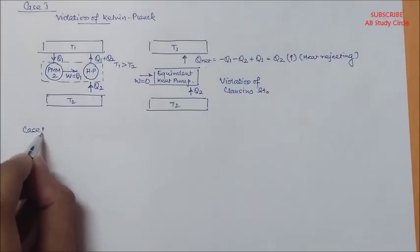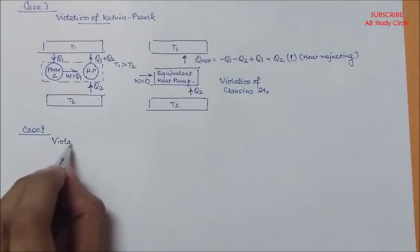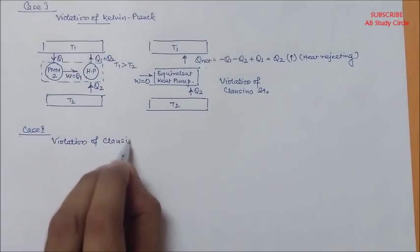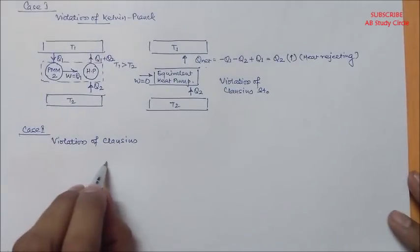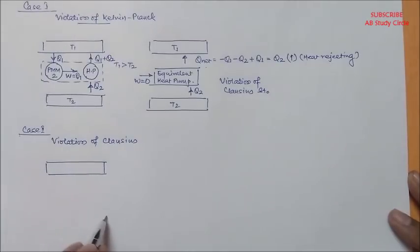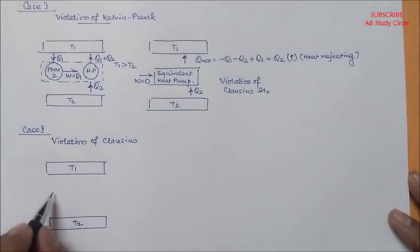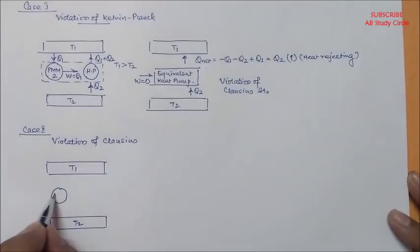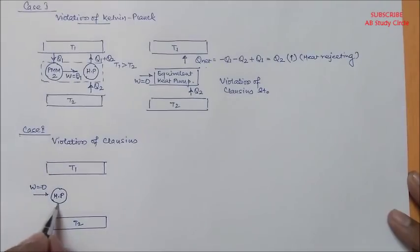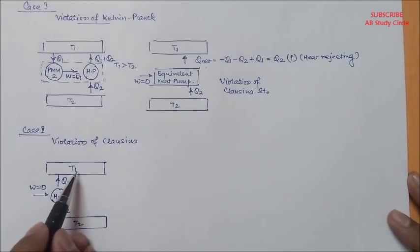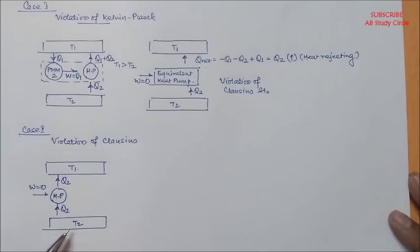So let's move to Case 2: Violation of Clausius's statement. Now let's create two thermal reservoirs maintained at temperature T1 and T2. Let's create a heat pump which is a violation of your Clausius's statement — which will receive zero amount of work input and delivers Q2 amount of heat to the thermal reservoir maintained at temperature T1 by extracting Q2 amount of heat from the thermal reservoir maintained at temperature T2.